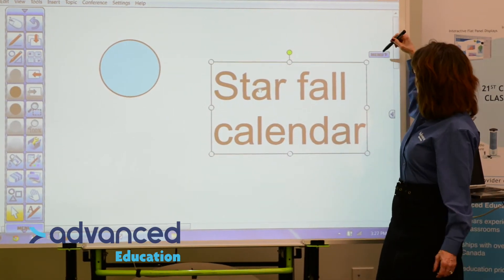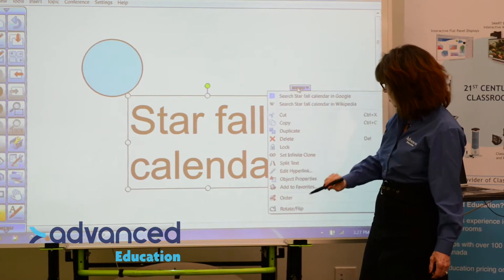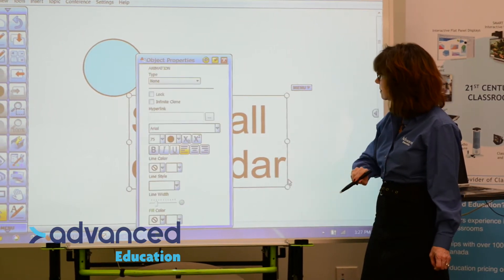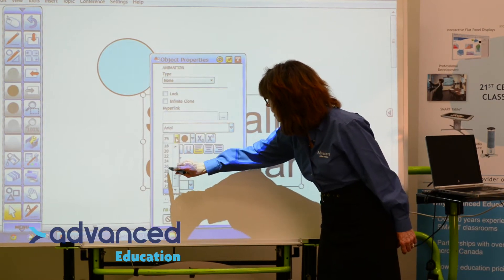And again, in the top is the menu. I'll just move it over so you can see that. Here's the menu, and we can change the object properties. And I'm going to change the size to 26.